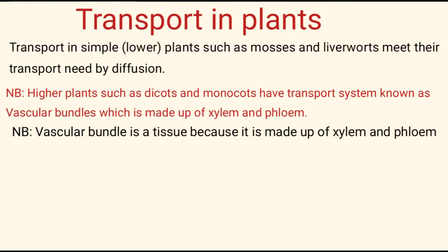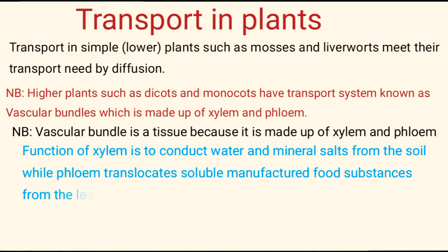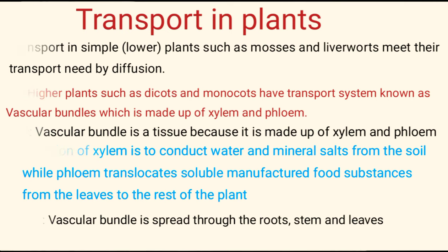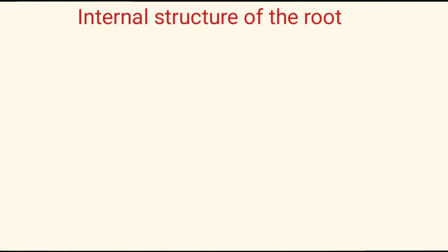The vascular bundle is a tissue because it is made up of xylem and phloem. The function of xylem is to conduct water and mineral salts from the soil to the rest of the plant, while phloem conducts — or translocates — soluble manufactured food from the leaves to the rest of the plant. Note that the vascular bundle is spread through the roots, stem, and leaves.